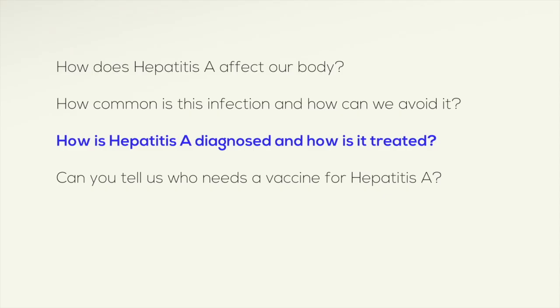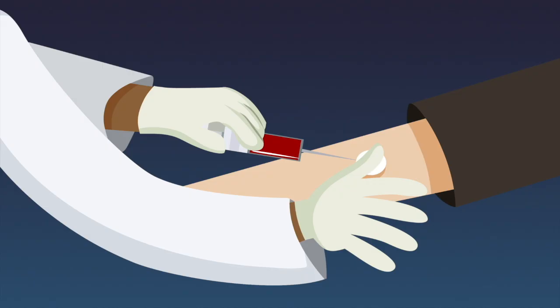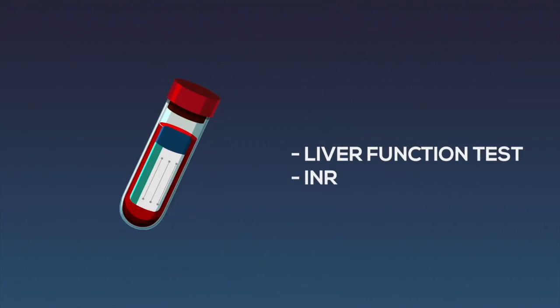Dr. A, how is hepatitis A diagnosed and how is it treated? After listening to the story of the person, we do a few blood tests to diagnose hepatitis A. We also do other blood tests such as liver function test and INR to see how bad is the liver damage.